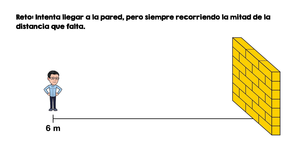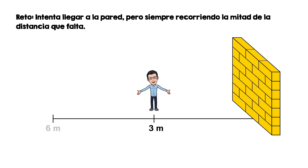Primero, Guillito tiene que llegar a la mitad de los 6 metros, es decir, a 3 metros. Lo hace sin problema. Luego debe avanzar la mitad de los 3 metros que son 1.5 metros. Ahora se encuentra a 1.5 metros de la pared y tiene que caminar hasta la mitad de esa distancia, es decir, a 75 centímetros antes de la pared.